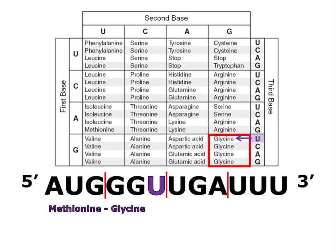You may have noticed that all of the codons that start with GG code for the amino acid glycine, but it's still very important that you understand how to use the third base.